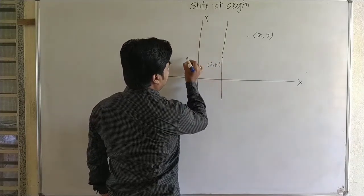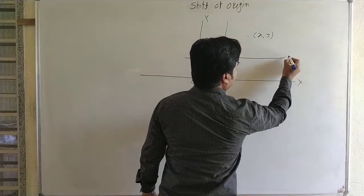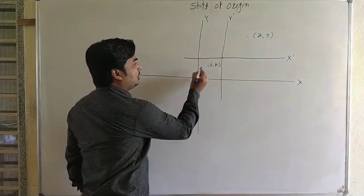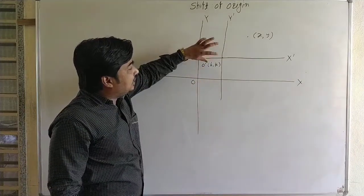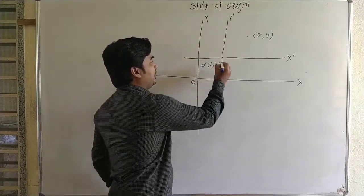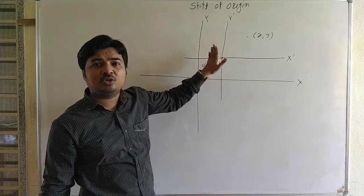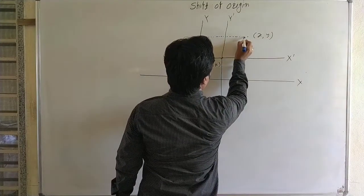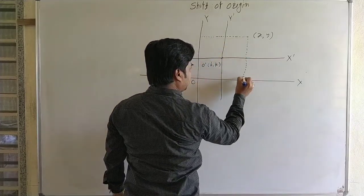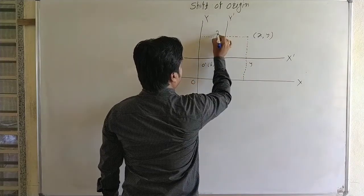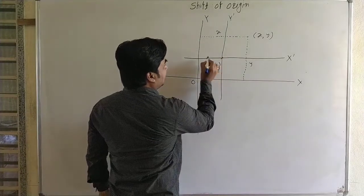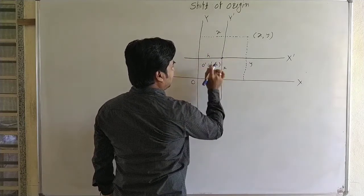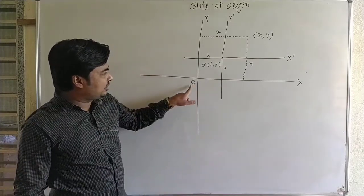We draw the new axes parallel to the original axes. These new coordinate axes are called x-dash and y-dash, and the new origin is O-dash. When we shift the origin to point h comma k, we want to find the new coordinates of any point. The distance of the point from the original x-axis is y, and the total x-distance is x. Since the new origin is at h comma k, the distance h and distance k correspond to the shifted origin.